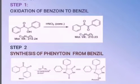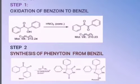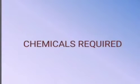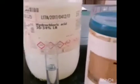Synthesis of phenytoin involves two steps. First step is oxidation of benzoin to benzil. Second step is synthesis of phenytoin from benzil. Chemicals required: concentrated HCl, concentrated nitric acid, urea, benzoin, potassium hydroxide, and ice-cold water.